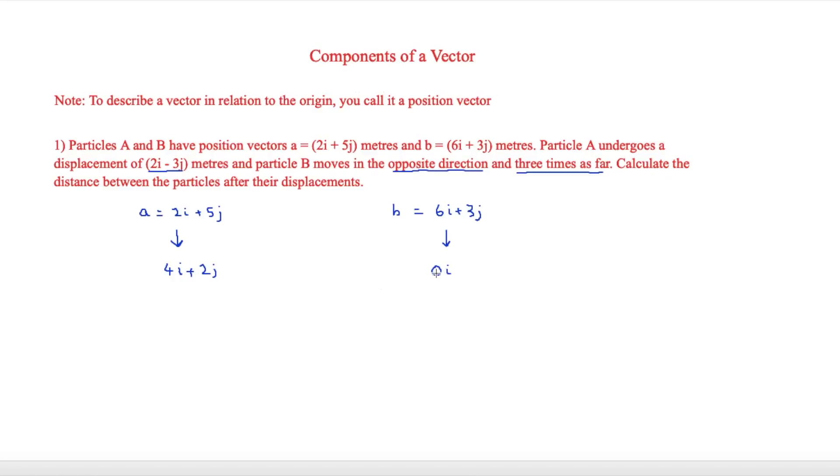So that would essentially just be at the origin. And then we'll make this 9j because it's three times as far and in the opposite direction. So 9 plus 3 is equal to 12. So plus 12j.